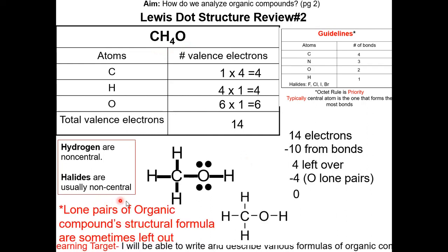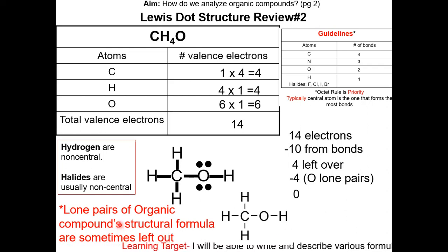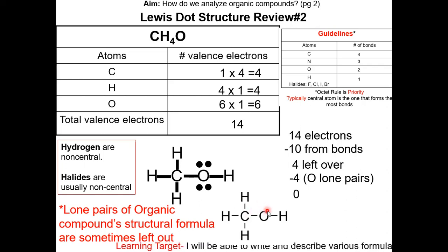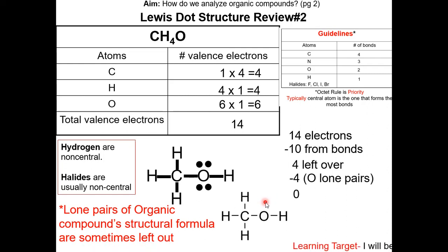Sometimes the lone pairs of an organic compound's structural formula are left out. The organic compounds still have the lone pairs, but they are invisible in the structural formula. So the structural formula of CH4O is valid even though the lone pairs on the oxygen are not shown — the lone pairs are assumed to be there. For organic chemistry questions on the Regents, sometimes the organic compound structural formula leaves out the lone pairs.